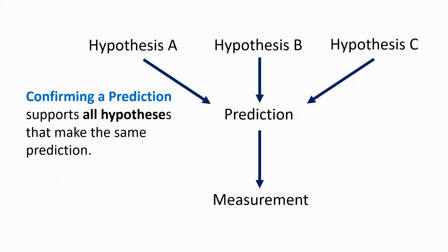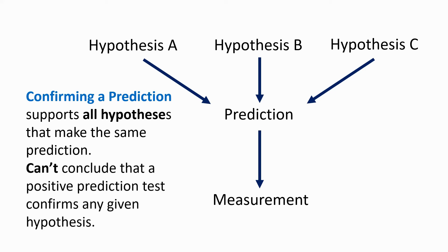We can use the same kind of graph to illustrate a different point that I mentioned earlier. Here, we have the case where we have a number of very different hypotheses, all of which make the same prediction. And you can see right away that confirming a prediction supports all the hypotheses that make the same prediction. For example, in principle, it's possible that there were a number of different reasons that the lake water was acidic, and therefore measuring lake water and finding that it was acidic would not prove the acid rain hypothesis is true. And in general, you can't conclude that a positive prediction test confirms any given hypothesis.